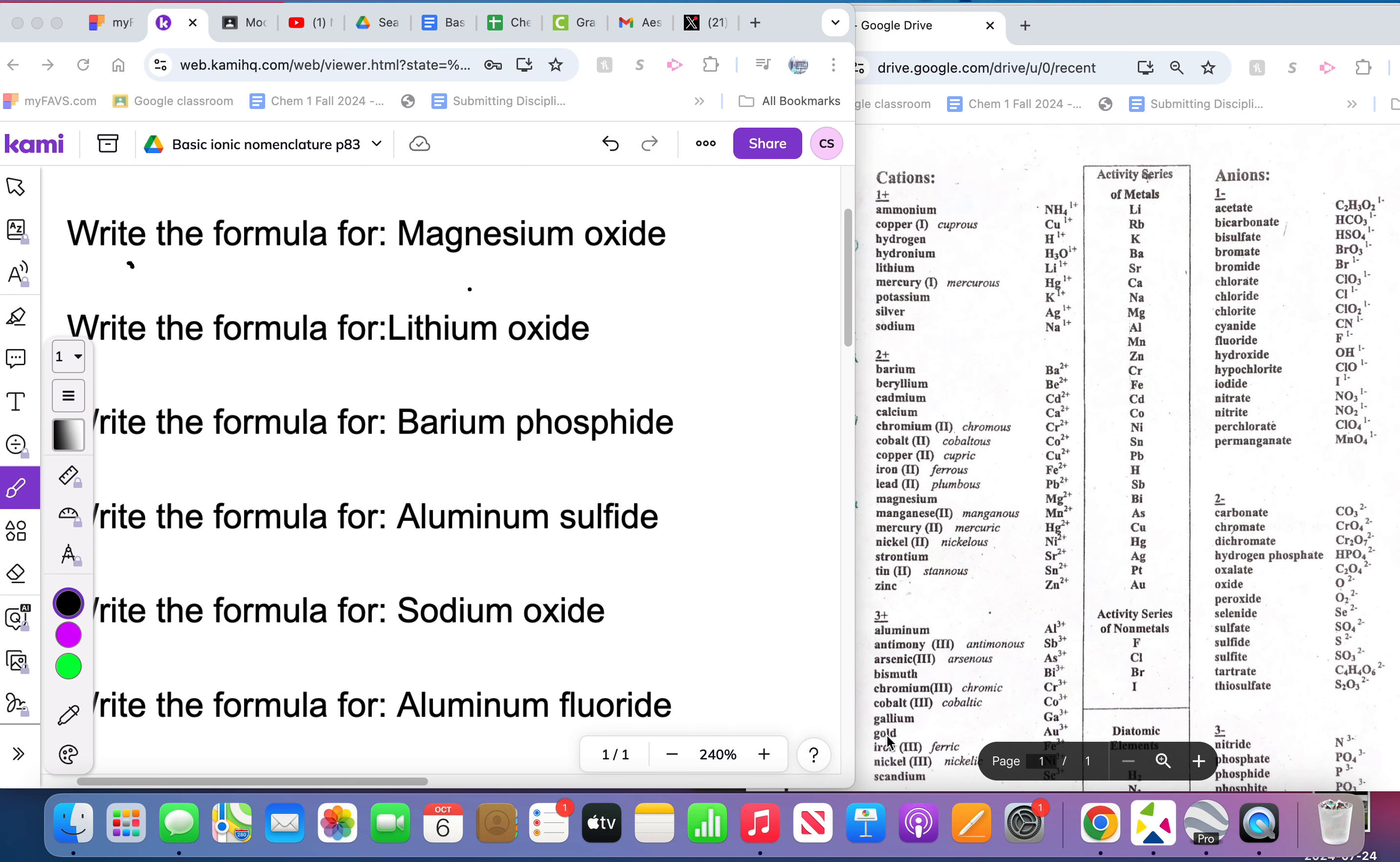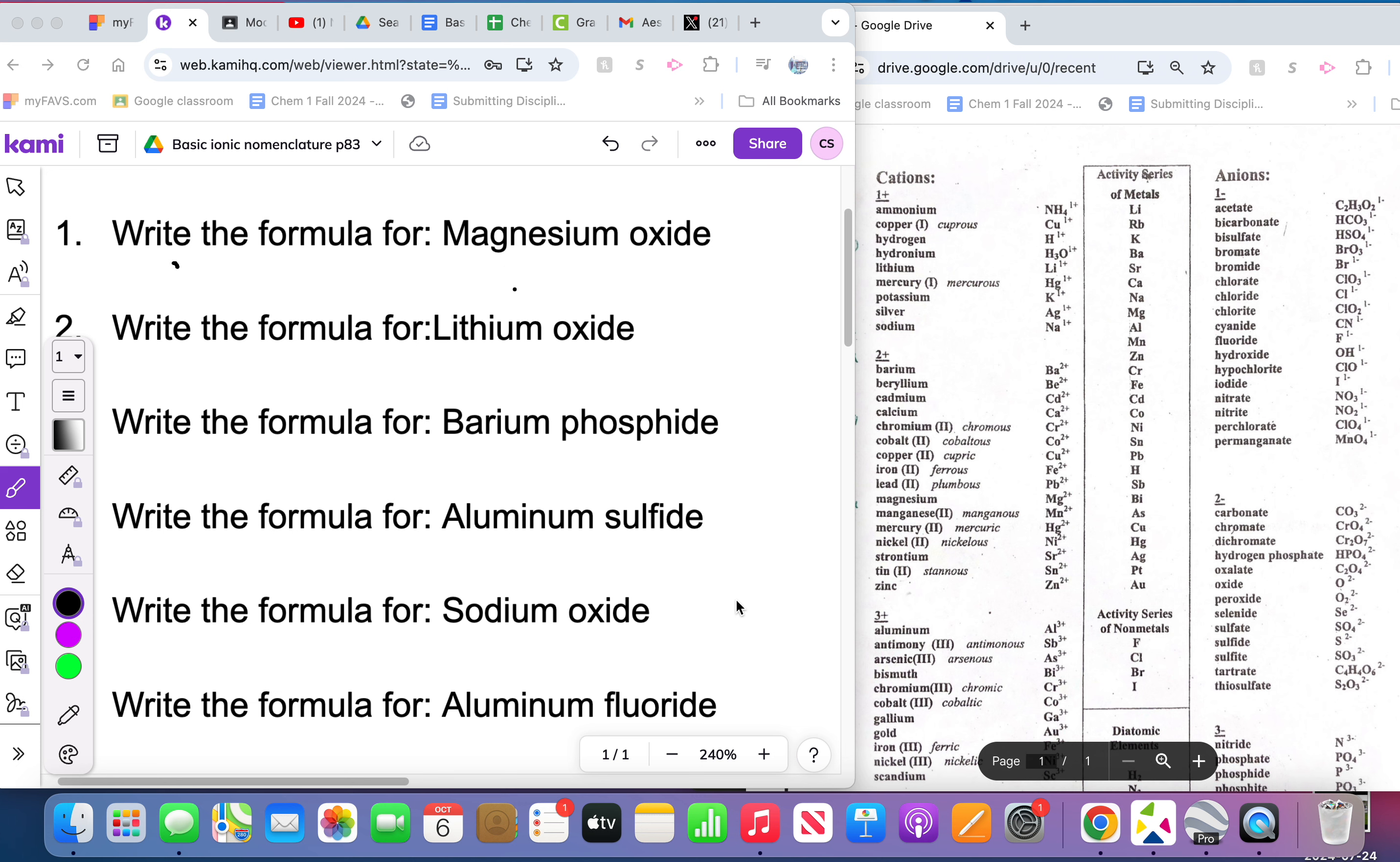This video is for how to write formulas for basic ionic compounds. What you'll need is to get out your ion chart to help you do this. The first thing that you're going to do is look up the positive ion in the formula.